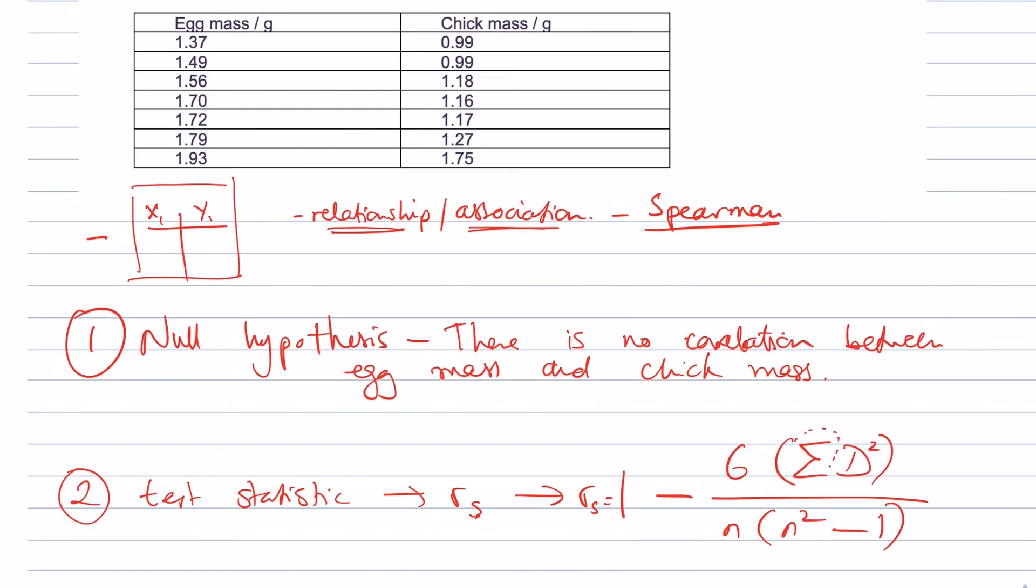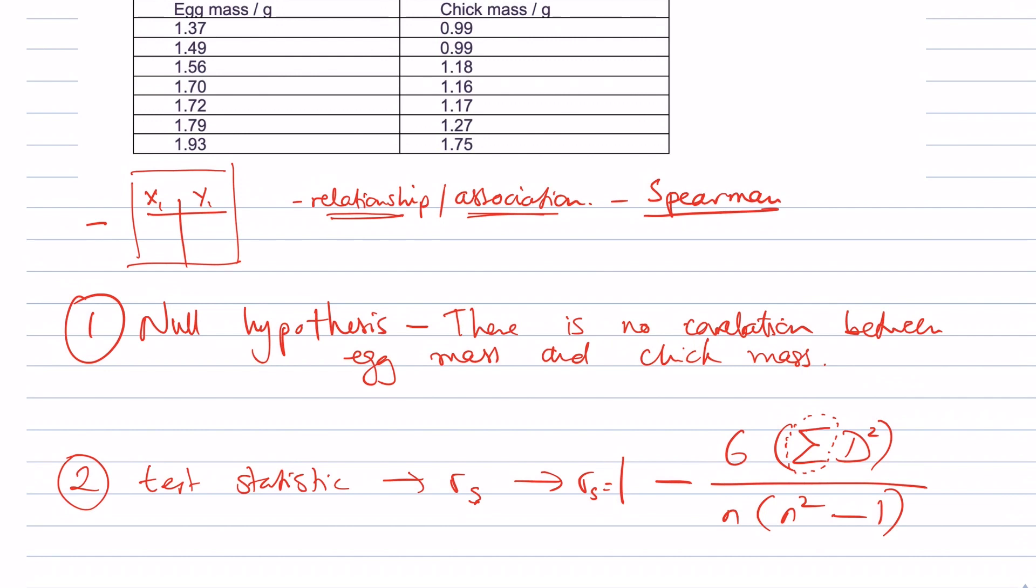This symbol here complicates our equation, because what that means is we have to repeat a certain part of this equation a number of times, and then add all those values up. So it's not just simply a case of putting numbers into the equation. We have to put all our data through that part of the equation, and then add them all up. So let's go back to our table at the top here. You don't have to start from scratch, you can build on your table.